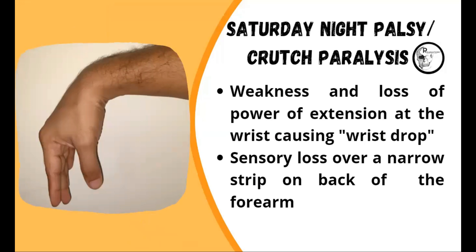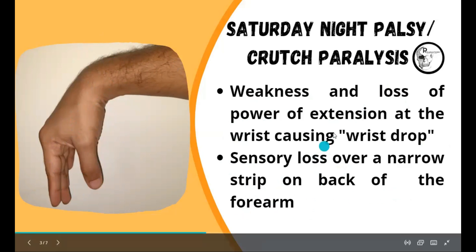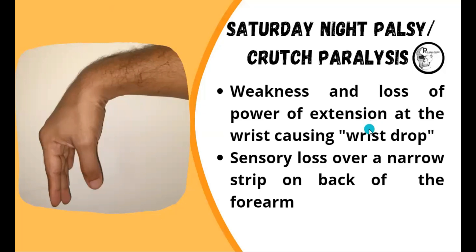As the term suggests — Saturday night palsy — you may wonder why it happens on Saturdays and how it happens. Let's first look at the presentations of this condition. The typical presentation involves weakness and loss of power of extension at the wrist, causing wrist drop. The person will be unable to extend the wrist backwards. Associated with that, there will be sensory loss over a narrow strip on the back of the forearm. These two are the typical presentations.